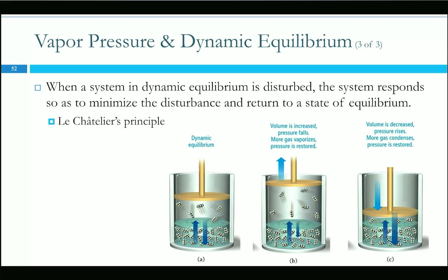Most electricity is generated by boiling water until it becomes steam, and then running that high-pressure steam through turbines. As it spins the turbines, pressure decreases, it cools, and gets returned to the boiler. Nuclear power plants use nuclear fission to generate the heat — it's a really fancy way to boil water.